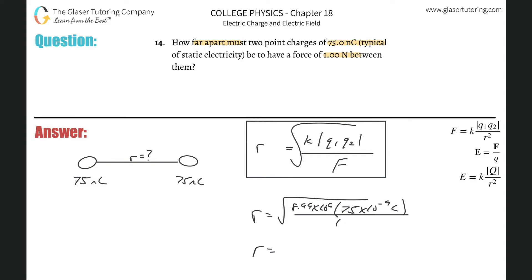So square root of 8.99 times 10 to the ninth multiplied by—oh whoa whoa whoa, that's what happens when you start flying, Andrew. What did I forget? I forgot the other charge.